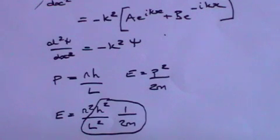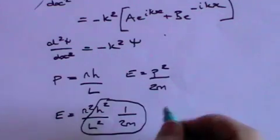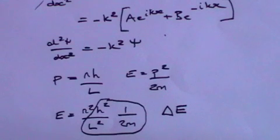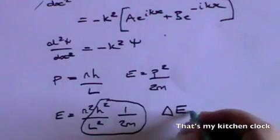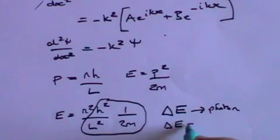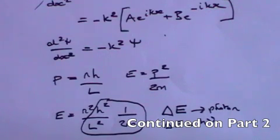Because n can be 1, 2, 3, and so on. And if that particle moves between these energy levels, there will be an energy difference representing the difference between one energy and another, and that will give off a photon. The photon will have an energy which is ΔE, which equals hν, where ν is the frequency of the light of which that photon is a part.